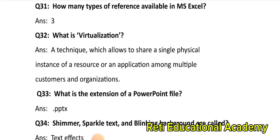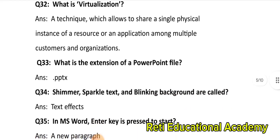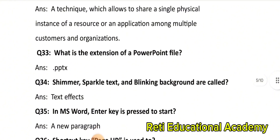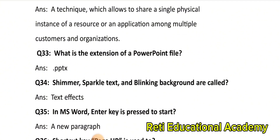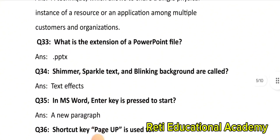Question number 33: What is the extension of a PowerPoint file? The correct answer is: .pptx. Question number 34: Shimmer, sparkle text, and blinking background are called: Text Effects. Question number 35: In MS Word, the Enter key is pressed to start a new paragraph.